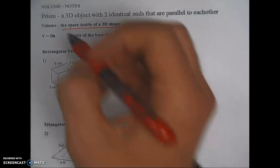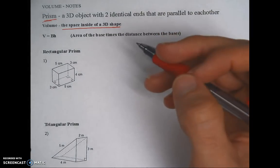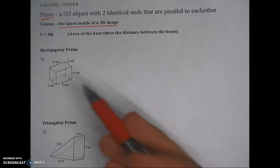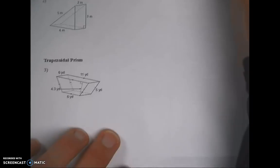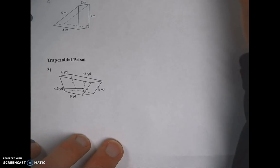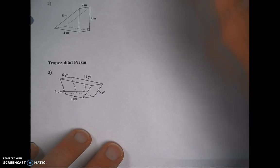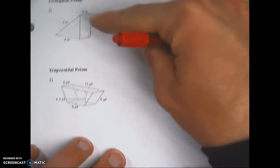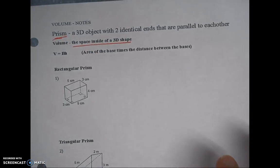Today we're specifically talking about prisms. Prisms come in all different shapes and sizes — you can see three of them here: a rectangular prism, a triangular prism, and a trapezoidal prism. They all have trapezoids, triangles, or rectangles respectively.